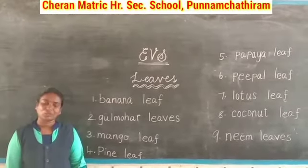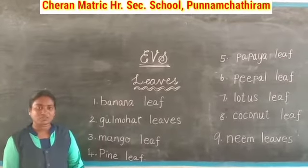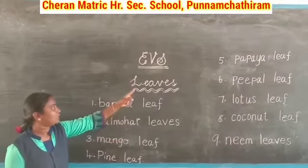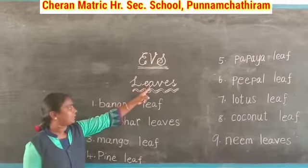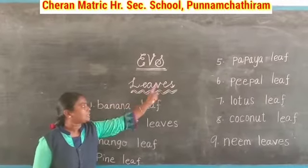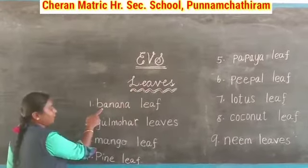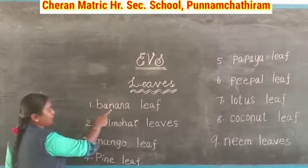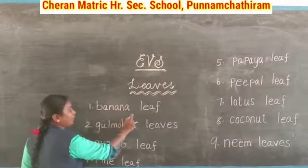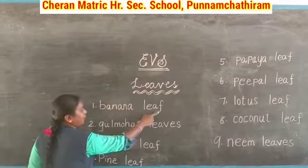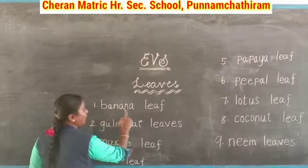Okay children, now we will see the spelling of leaves. Look at the box, children: L, E, A, V, E, S — leaves. Now banana leaf: B, A, N, A, N, A — banana. L, E, A, F — leaf. Banana leaf.